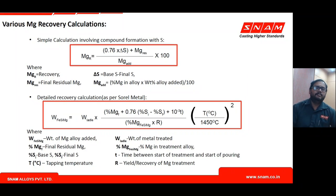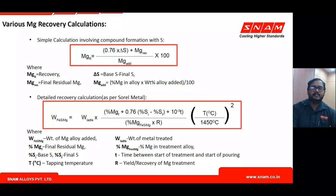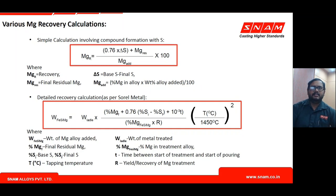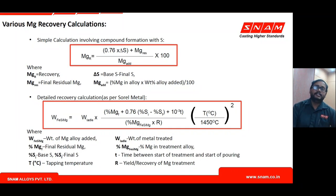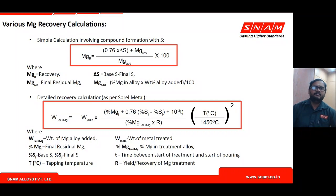Formula one does not account for process parameters such as varying metal weight, tapping temperature variation, or holding time after treatment. An extended formula provided by Sorelmetal includes liquid metal weight, temperature, and time to empty the ladle. If a foundry needs to control residual magnesium and magnesium recovery, they should control these other parameters. Once stabilized, formula one can be used, provided all other parameters are under control.